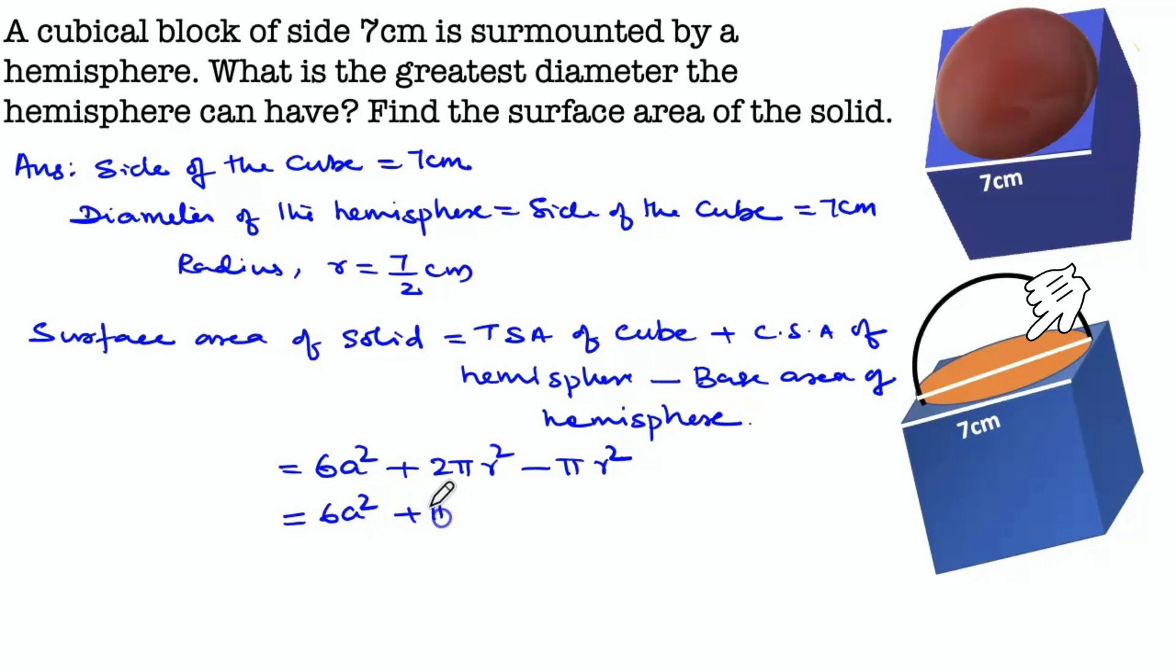Equals 6 into square of 7 plus 22 by 7 into 7 by 2 into 7 by 2, equals 6 into 49 plus 11 into 7 by 2, equals 294 plus 38.5, equals 332.5 cm².